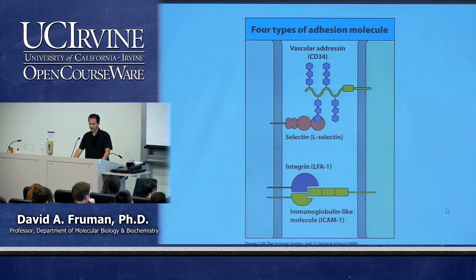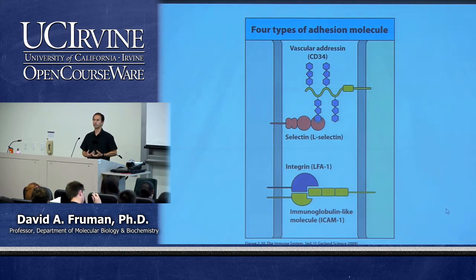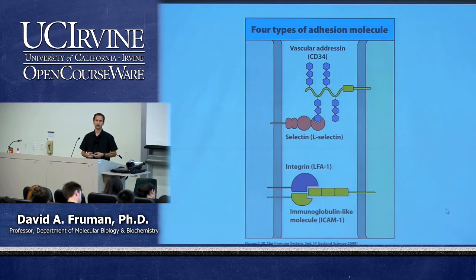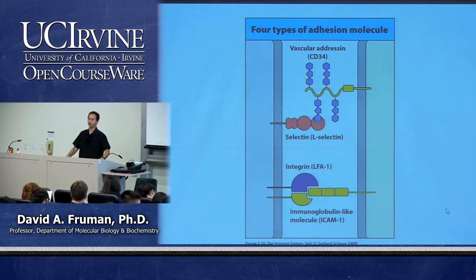With that I will get into today's lecture. Most of today's lecture is going to be devoted to the complement system. But before we get there we need to talk about a very important process: how neutrophils get out of the bloodstream and into inflamed tissues. I want to start by defining the term homing. Homing is a general term used in immunology to describe the movement of some cell from the vasculature, from the bloodstream into a tissue.